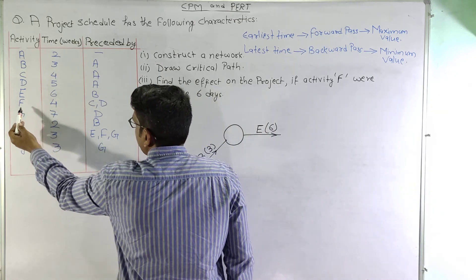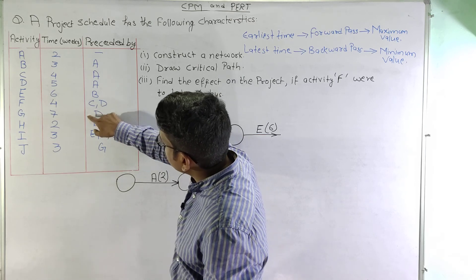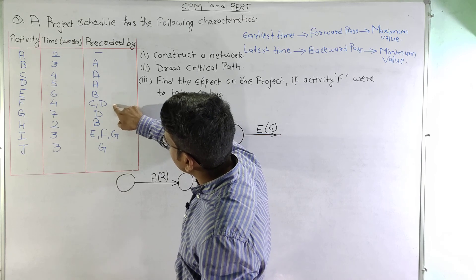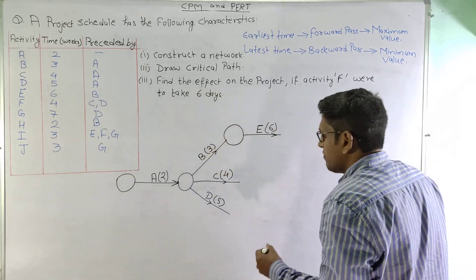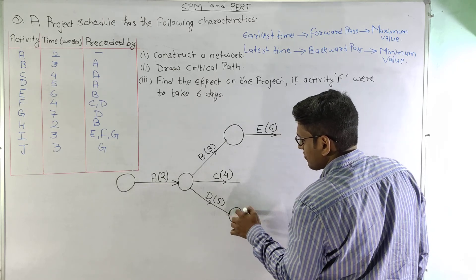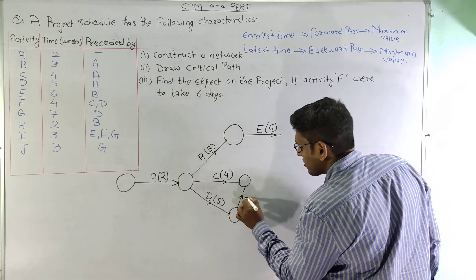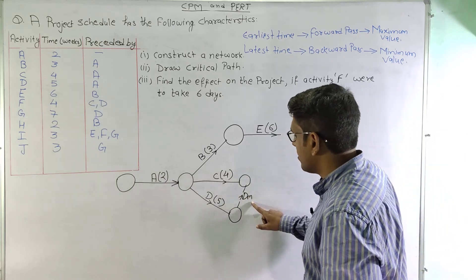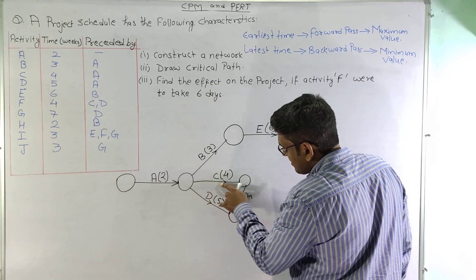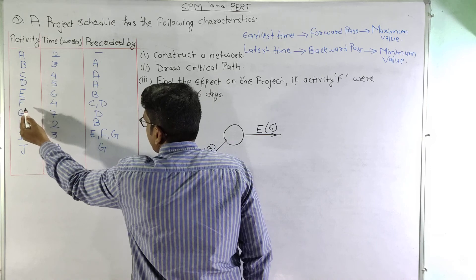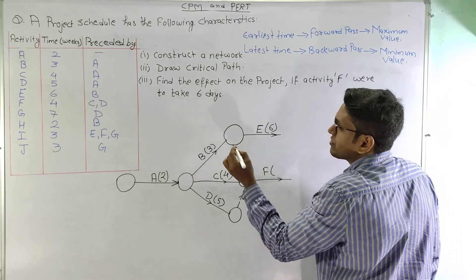Moving on to activity F, activity F is preceded by both C and D. Looking further, another activity is also preceded by D and C. So there will be a dummy activity for these two. We end activity D at one node and activity C at another node, and draw a dummy activity from D to C. At the D-only node, only activity D is completed, and at the C-D node, both C and D are completed. We start activity F from there, as it is preceded by C and D, and it consists of 4 weeks.